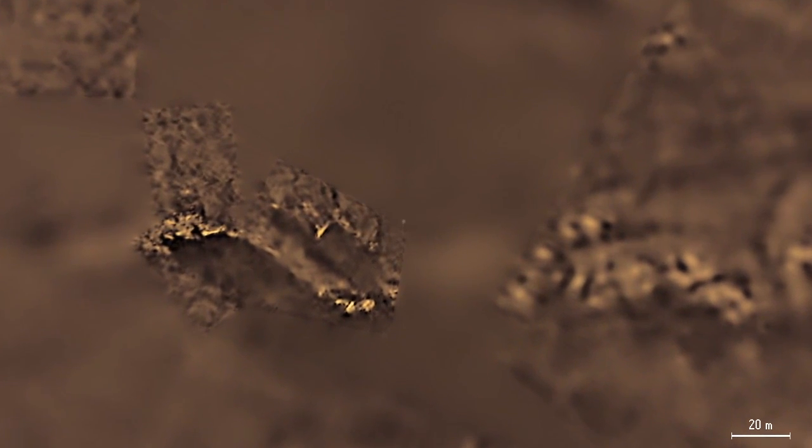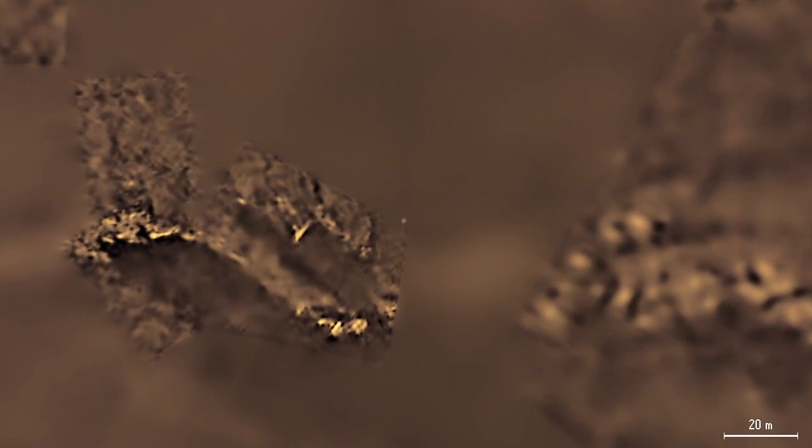The bright spots may be exposed patches of water ice. The white dot in the center of the image is the landed Huygens probe.